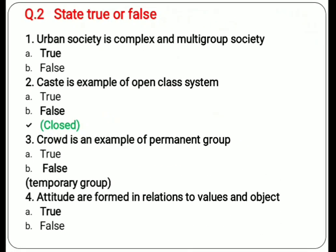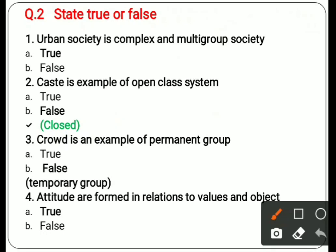Now we discuss true/false questions. First: urban society is a complex and multiple group society — answer is true. Second: caste is an example of open class system — answer is false; caste is a closed system. Third: crowd is an example of a permanent group — answer is false; it is a temporary group.